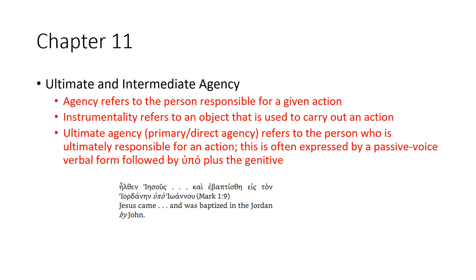The Greek example reads: 'Ēlthen Iēsous kai ebaptisthē eis ton Iordanēn hupo Iōannou.' So if we just saw 'ebaptisthē,' we would say 'Jesus came and was baptized,' but we don't know by whom. However, 'eis ton Iordanēn hupo Iōannou' — hupo Iōannou — means 'by John.' Even if you're shaky on grammar but fluent in reading, you would understand that this was baptized in the Jordan by John.